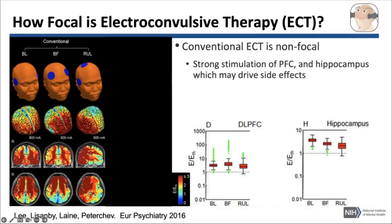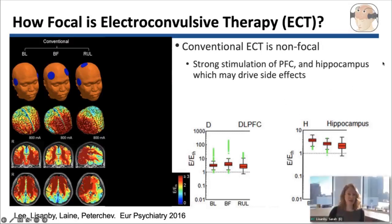Realistic head modeling of the electric field induced in the brain by electroconvulsive therapy, or ECT, has taught us that ECT is not focal. Conventional ECT really is a whole brain stimulation intervention. Regardless of whether you're using bilateral, bifrontal, or right unilateral electrode placements, you can see in this colorized plot that almost the entire brain is being stimulated above the threshold for neuronal depolarization — threshold here is shown in aqua.